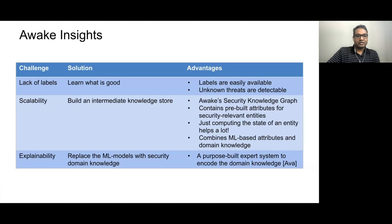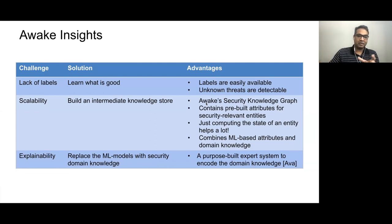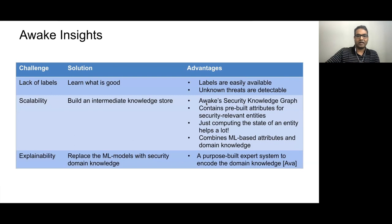So to address the lack-of-labels problem, we learn what is good. The advantage is that labels for good behavior are easily available, and once you know what is good, everything else is or can be bad — so it's easy to find unknown threats. You don't have to know what to look for in order to find what is bad.